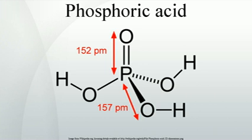The anion after the first dissociation, H2PO4⁻, is the dihydrogen phosphate anion. The anion after the second dissociation, HPO4²⁻, is the hydrogen phosphate anion. The anion after the third dissociation, PO4³⁻, is the phosphate or orthophosphate anion. For each of the dissociation reactions, there is a separate acid dissociation constant, called Ka1, Ka2, and Ka3, given at 25°C.